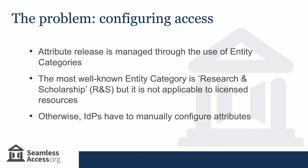The most well-known entity category in use today is the RefEDS Research and Scholarship, or R&S, entity category. RefEDS is the Research and Education Federations group, which represents the Global Research and Education Identity Federations. This entity category only applies to service providers that are operated for the purpose of supporting research and scholarship interaction, collaboration, or management, at least in part. It cannot be used for access to licensed online resources. This means there are no standards for how identity providers should release attributes for the many use cases that fall outside of the R&S entity category, such as library access to licensed resources. SeamlessAccess is currently working on new standards that will provide new entity categories for this and other uses.